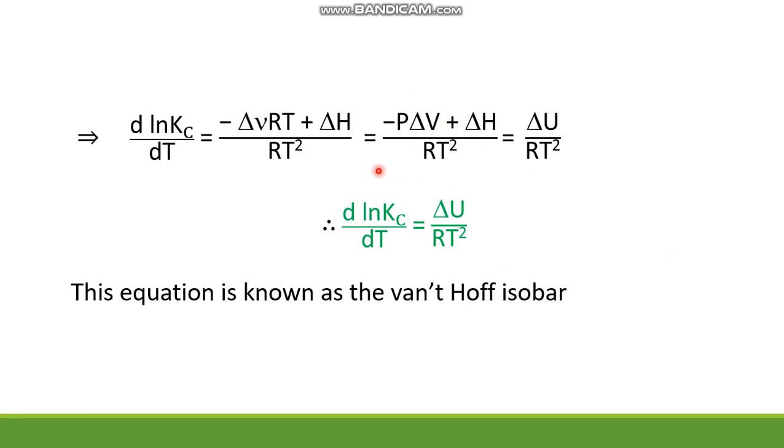So the linguistic description is: the rate of change of the natural log of equilibrium constant in terms of concentration with respect to temperature. This is equal to the value delta U by RT squared, where delta U is the internal energy change, R is universal gas constant, and T is temperature as usual.